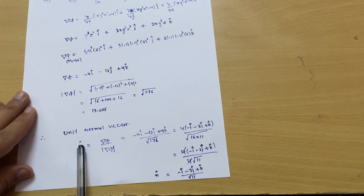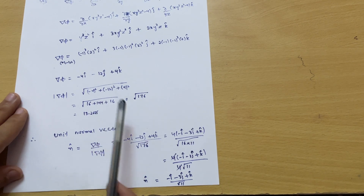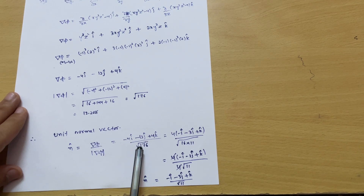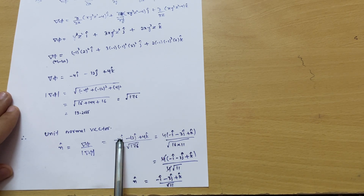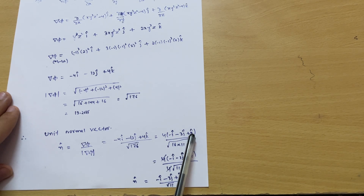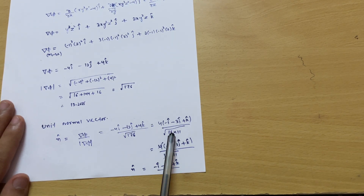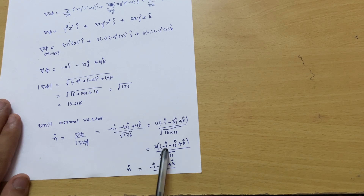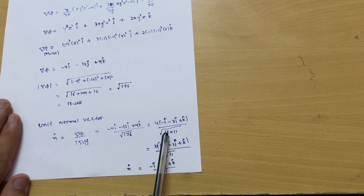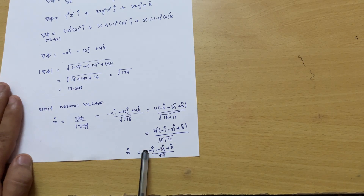The unit normal vector equals del phi divided by mod of del phi: (−4 i-cap − 12 j-cap + 4 k-cap) / √176. Taking 4 as common: 4(−i-cap − 3 j-cap + k-cap) / √176. Writing 176 as 16 × 11, we get √176 = 4√11. The 4s cancel, giving the final answer: (−i-cap − 3 j-cap + k-cap) / √11.